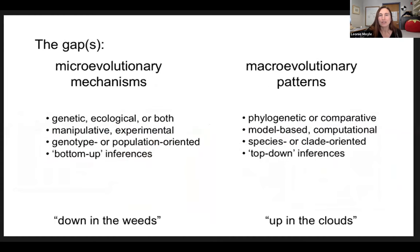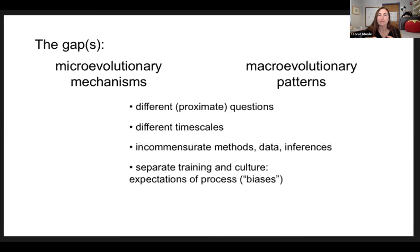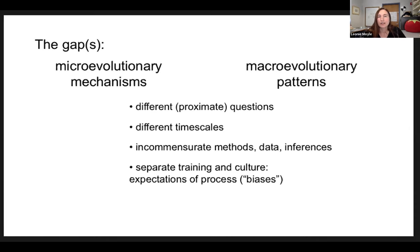So given these traditions, what are the gaps that exist between them? The most evident ones are that they're often motivated by really different proximate questions, focused on different timescales, and they tend to have incommensurate methods, data, and inferences. Part of that is also that people who work on micro and macroevolutionary processes often have different training and culture, and that leads to different expectations of process — which I'll loosely call biases in this particular case.